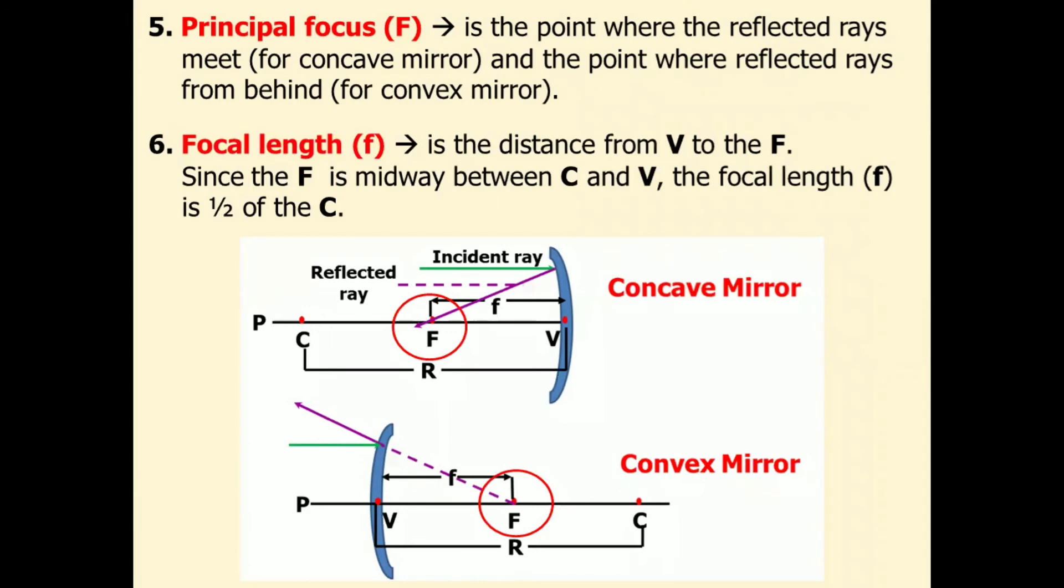The last concept is the focal length, represented by small f. It is the distance from V to F, or principal focus. Since the focus is midway between center of curvature and vertex, the focal length is one half of the radius. And in the diagram, this is our focal length.